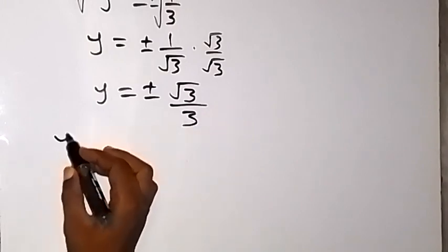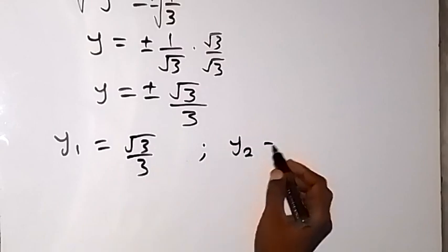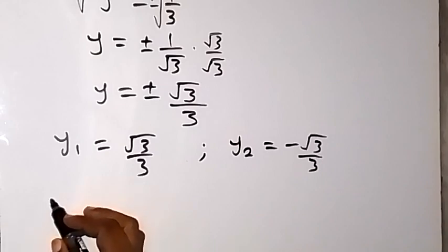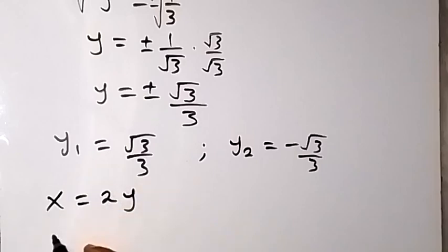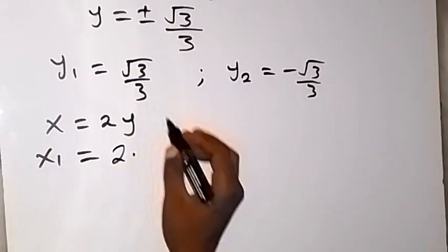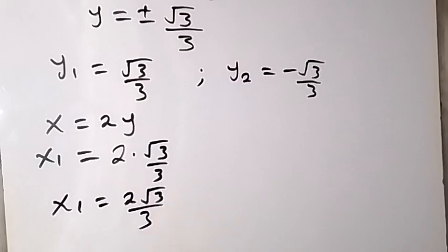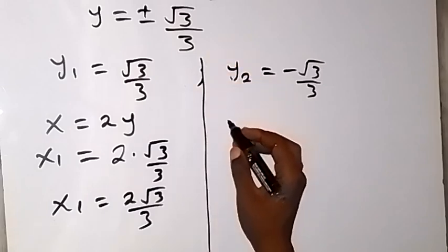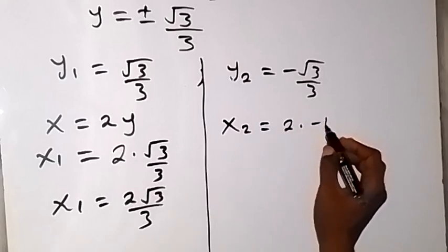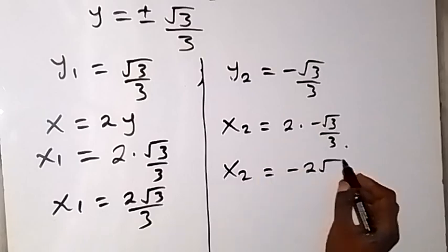We have two values of y. The first one, y1, equals to root 3 over 3, and the second value, y2, equals to minus root 3 over 3. We can get the corresponding values of x from equation 5, where x equals to 2y. So x1 equals to 2 multiplied by y1, which is root 3 over 3, giving us x1 equals to 2 root 3 over 3. Similarly, x2 equals to 2 times y2, that's 2 multiplied by minus root 3 over 3, giving us x2 equals to minus 2 root 3 over 3.